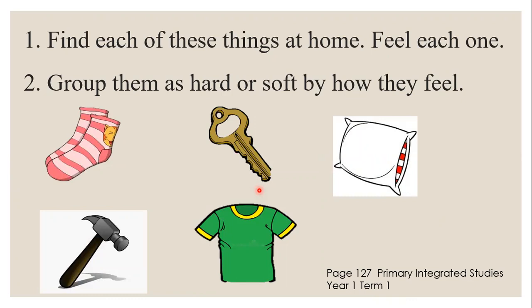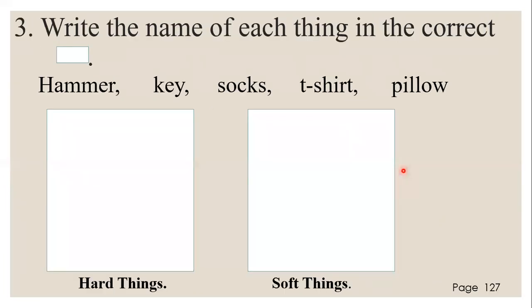Get out your primary integrated studies books. We are on page 127. Find each of these things at home: a pair of socks, hammer, a t-shirt, a key, and a pillow. You're going to find those things, then feel each one, then group them as hard or soft by how they feel. Write the name of each thing in the correct box — hard things or soft things.